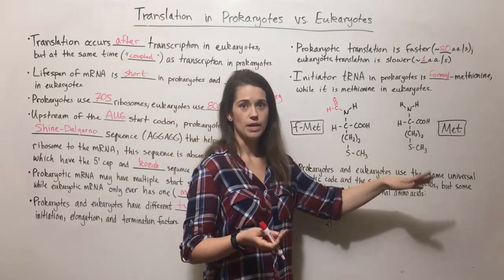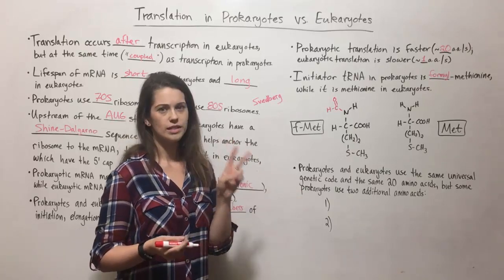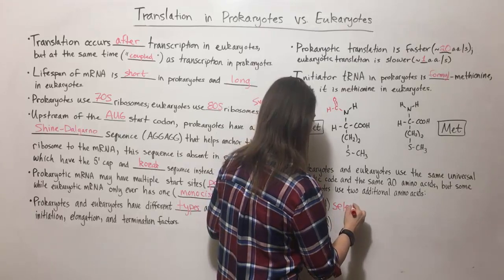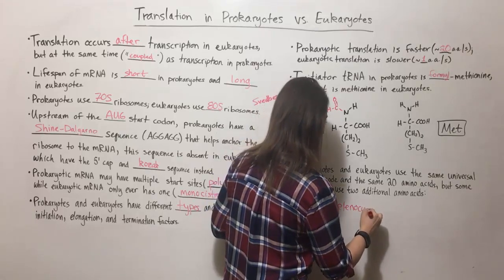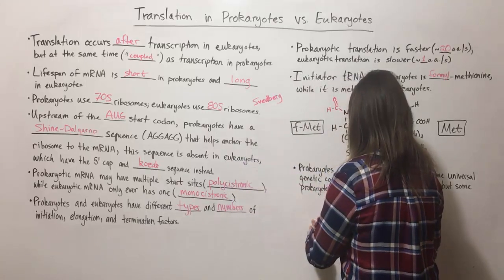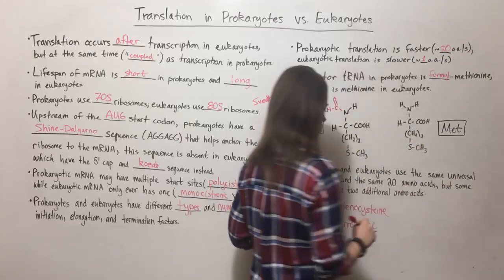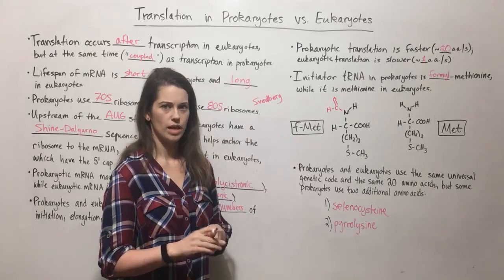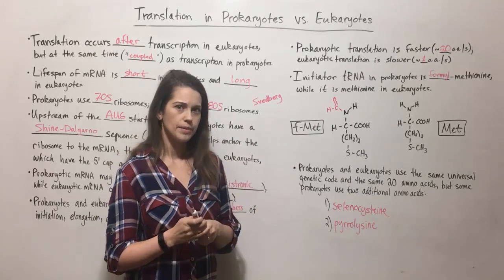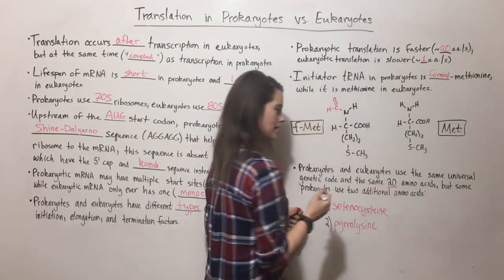We all use the same 20 amino acids, but some prokaryotes have two additional amino acids: selenocysteine and pyrrolysine. So some prokaryotes will have selenocysteine and pyrrolysine in some of their polypeptides, but eukaryotes stick to the other 20 amino acids.